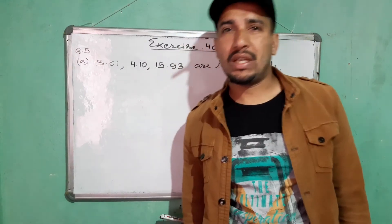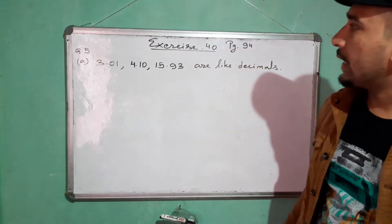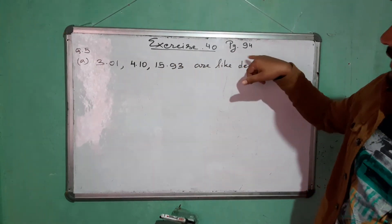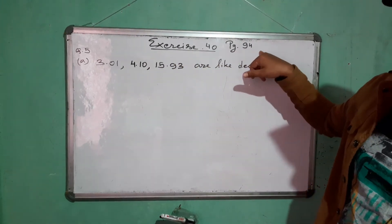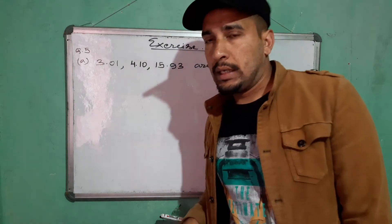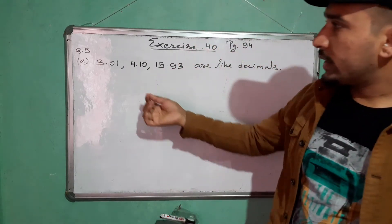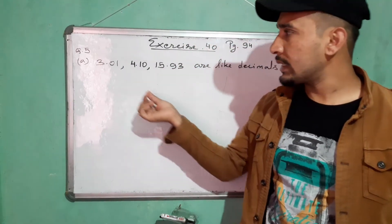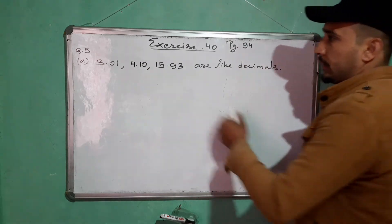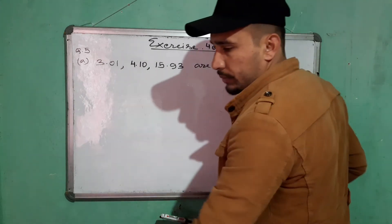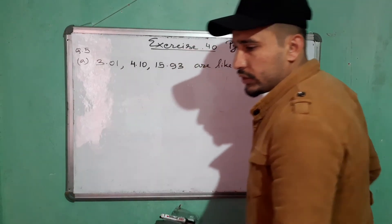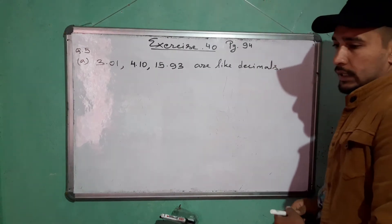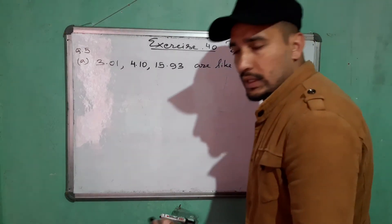Hello everyone, welcome to the class. In today's class we will continue Exercise 40, which is on page number 94 of your textbook. Up to question number 4 we have already completed in the previous class. Now let's see question number 5. Question number 5 says: which of the following statements are true? You have to write whether the statements are true or false.